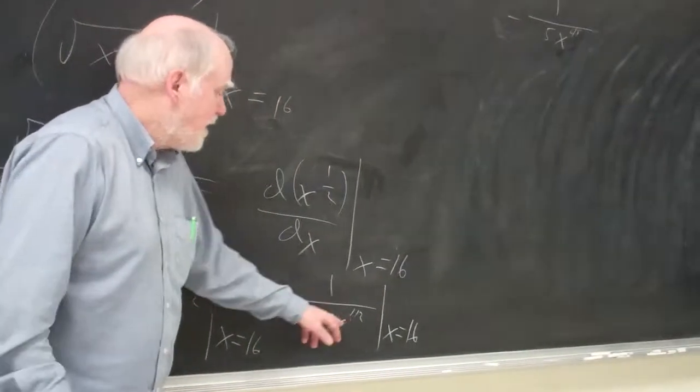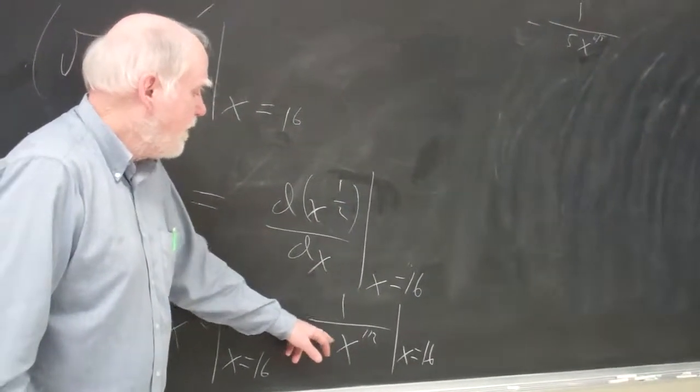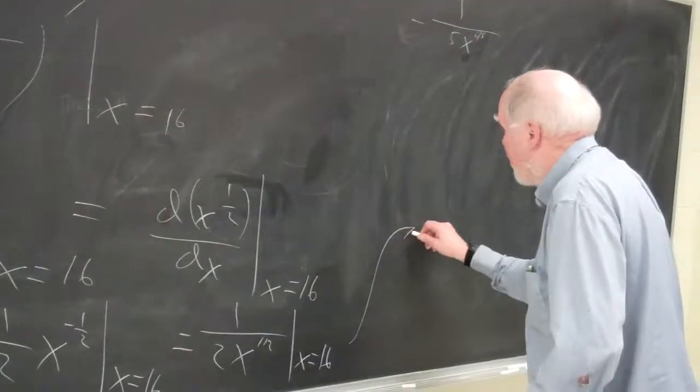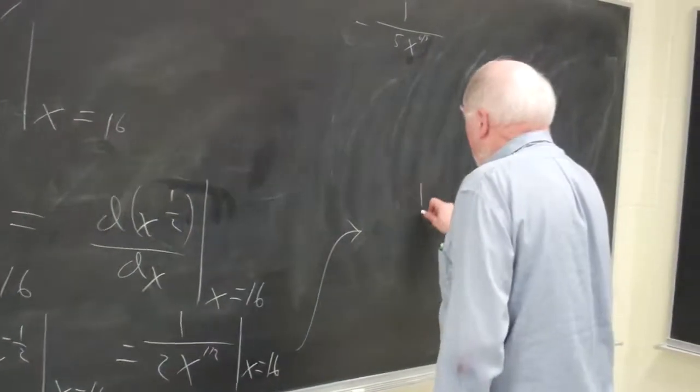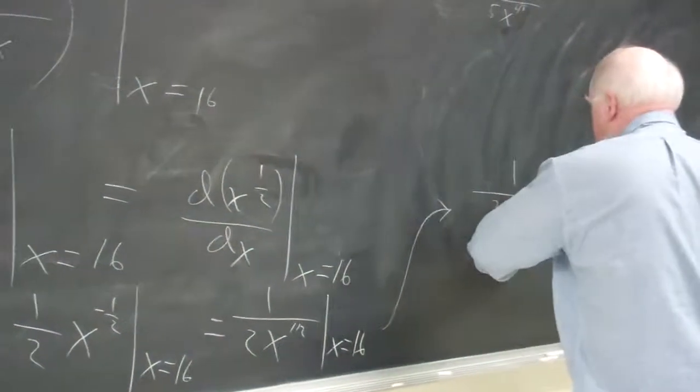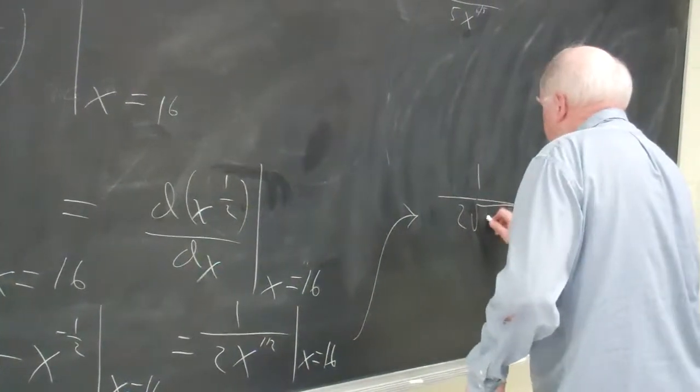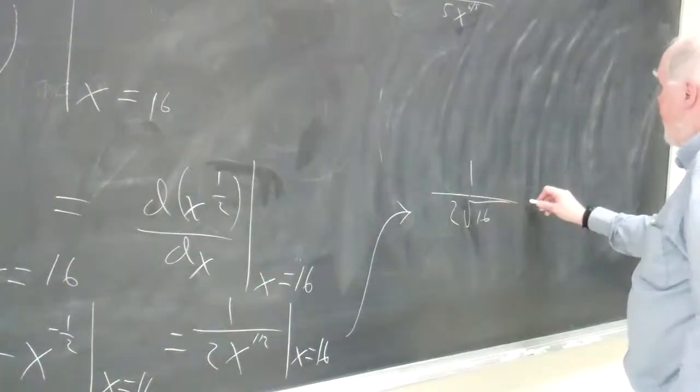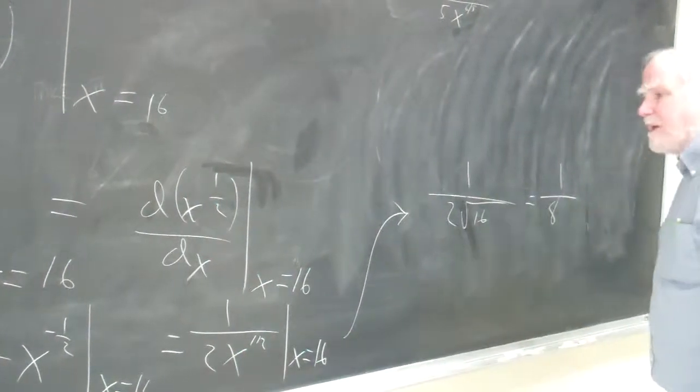Remember that 1/2 is the square root. So I've got 1 over 2 times the square root of x. Now I'm going to put 16 in. I've got 1 over 2 times the square root of 16. Of course, this is 4. This gives you 8. And it's 1/8. 1/8 is the answer.